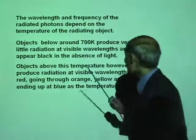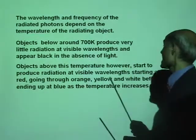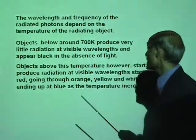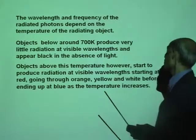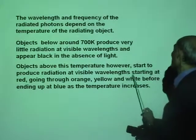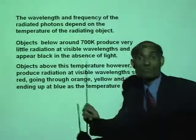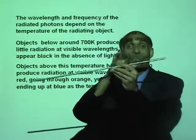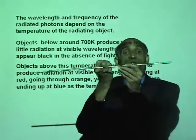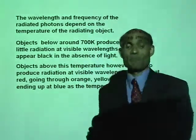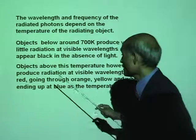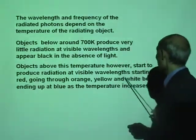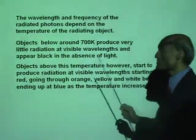Objects above this temperature, however, start to produce radiation at the visible wavelength starting at red. First this will start to glow red, then it will turn orange, yellow, white, and so on.